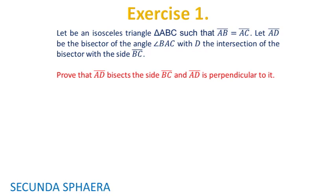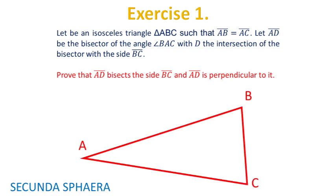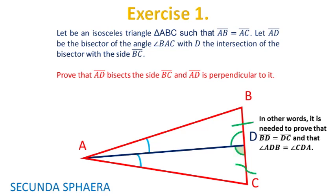As always I'll show context for the problem. I'll start drawing an isosceles triangle ABC. I'll draw the bisector of the angle BAC and label the point D, the intersection of the bisector AD with the side BC. It is important to remember that for solving this problem it is needed to prove that the segments BD and DC are equal and that the angles ADB and CDA are equal.